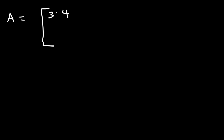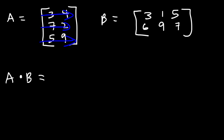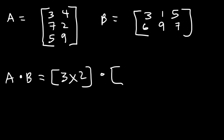Now let's work on another example. Matrix A is 3, 4, 7, 2, 5, 9 and matrix B is 3, 1, 5, 6, 9, 7. Matrix A has 3 rows and 2 columns, so it's a 3 by 2 matrix. Matrix B has 2 rows and 3 columns, so it's a 2 by 3 matrix.